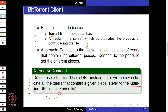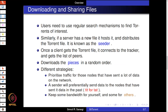For downloading and sharing files, users need to use regular search mechanisms to find torrents of interest. If a server has a new file, it will host it and distribute the torrent file — it is known as a seeder. Once the client finds the torrent file, it connects to the tracker or uses the mainline DHT and downloads the pieces in a random order — there is no fixed order, so you can download piece 3, piece 1, piece 2, piece 4 in any order.